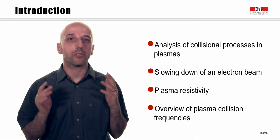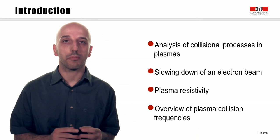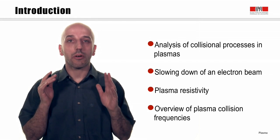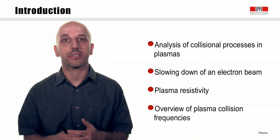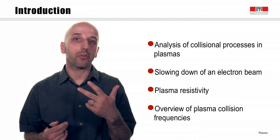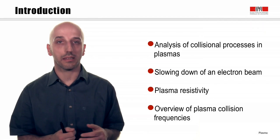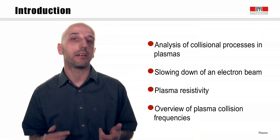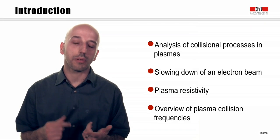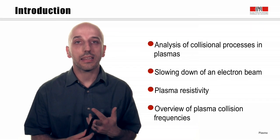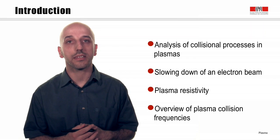In the past module, we have introduced the basic properties of Coulomb collisions in a plasma. We have now all the elements to study and analyze the collisional processes in a plasma, and we will focus on three of those. The first one is the slowing down of a beam that passes through a plasma. The second is the plasma resistivity, and then we will order the collisional timescales present in a plasma.